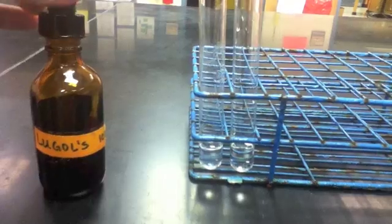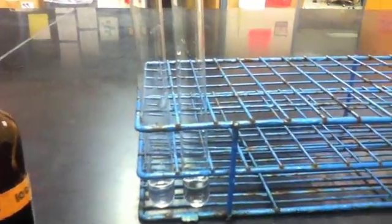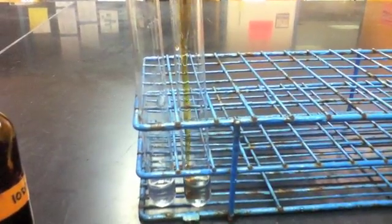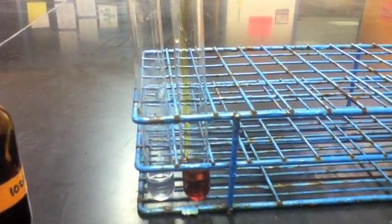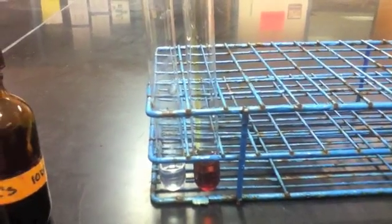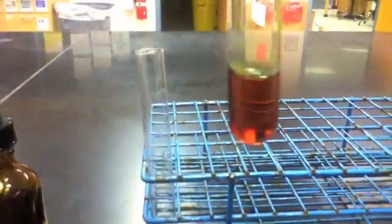I'll start by adding the iodine to the negative control tube. Without starch present, the mixture retains the original brownish-reddish coloration of the iodine. Even agitation does not change the color.